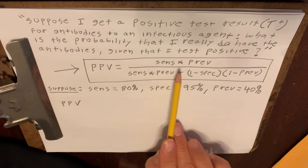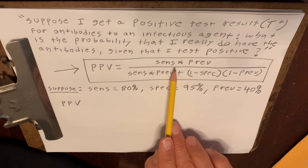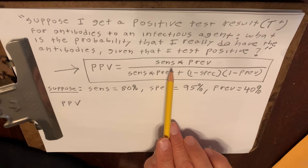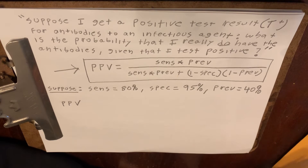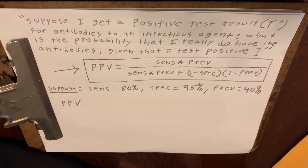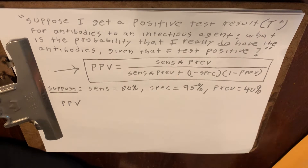Very quickly: the sensitivity is the probability that somebody with the disease will actually test positive for the disease. The specificity is the probability that somebody without the disease will actually test negative. And the prevalence is the probability that a randomly selected person from the general population or the subgroup from which the person was known to have come from actually has the disease.